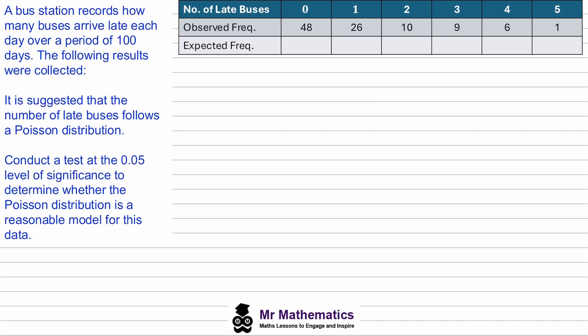So the first thing we need to do is state our hypotheses. We need to have a null hypothesis which we call H0, and this is that the number of late buses follows a Poisson distribution. Then we state a second hypothesis which is the alternative, H1, and this is the number of late buses does not follow a Poisson distribution.